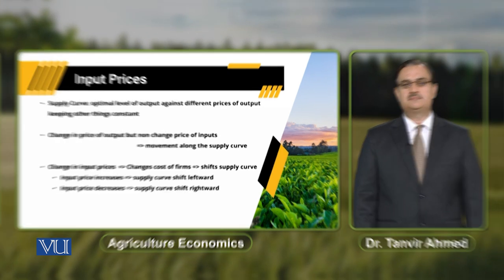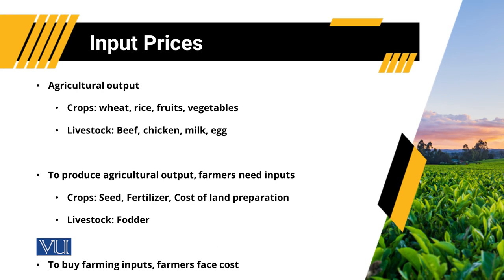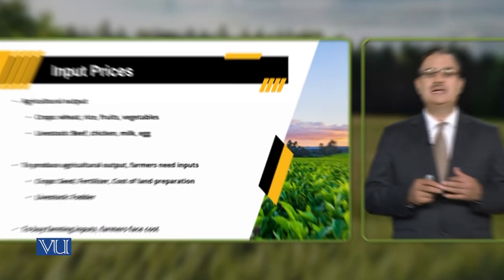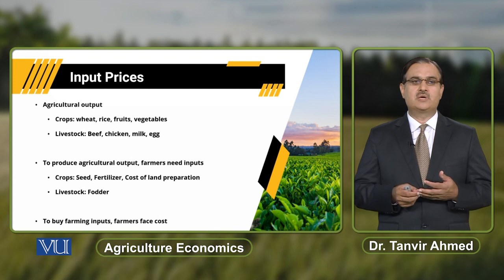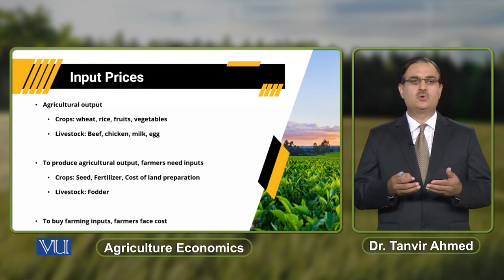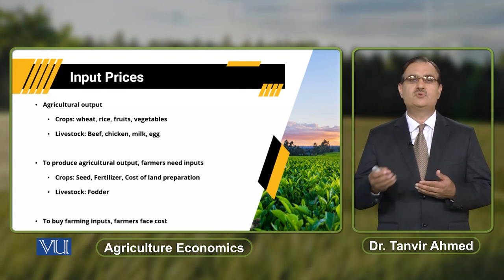Jab hum agricultural output ki baat karte hain, agar hum crops ke reference mein baat karein, to wahan pe mere paas wheat bhi hoga, rice bhi hoga, fruits bhi hoga, vegetables bhi hogi. Ab in saare outputs ko produce karne ke liye, farmer needs certain inputs. Wo inputs kya hain? Seed ho sakta hai, fertilizer bhi required hogi, cost of land preparation bhi involved hogi whenever a farmer needs to produce wheat, rice, fruits and vegetables.